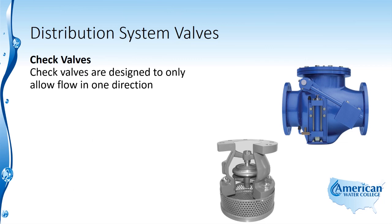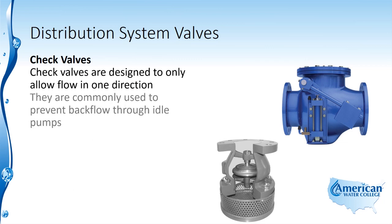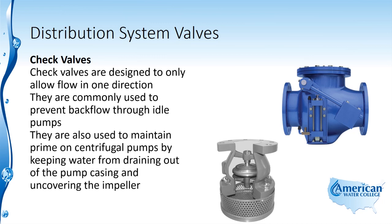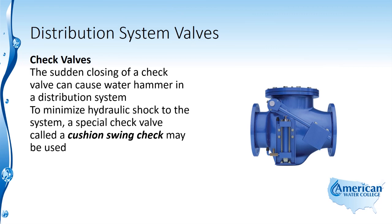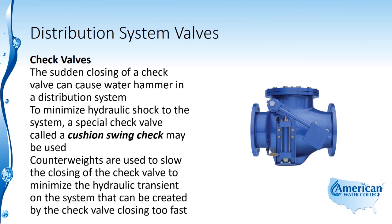Check valves are designed to only allow flow in one direction. They are commonly used to prevent backflow through idle pumps and to maintain prime on centrifugal pumps by keeping water from draining out of the pump casing and uncovering the impeller — this type is called a foot valve. The sudden closing of a check valve can cause water hammer in a distribution system. To minimize hydraulic shock, a special check valve called a cushion swing check may be used. Counterweights are used to slow the closing of the check valve to minimize the hydraulic transient created by the valve closing too fast.